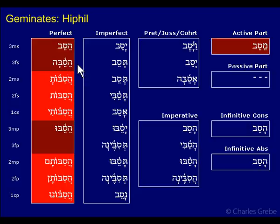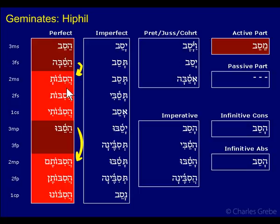We have the second person switch — as I've highlighted — and the tsere has reduced to a chataf patach, which it does in the hollow verbs as well. So we have tsere to chataf patach. Here our second tsere, our theme vowel, is reduced to hiriq.